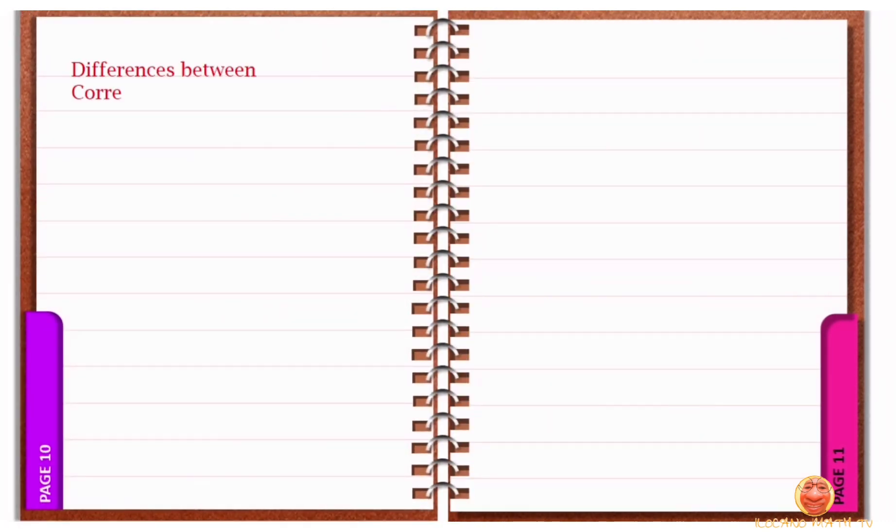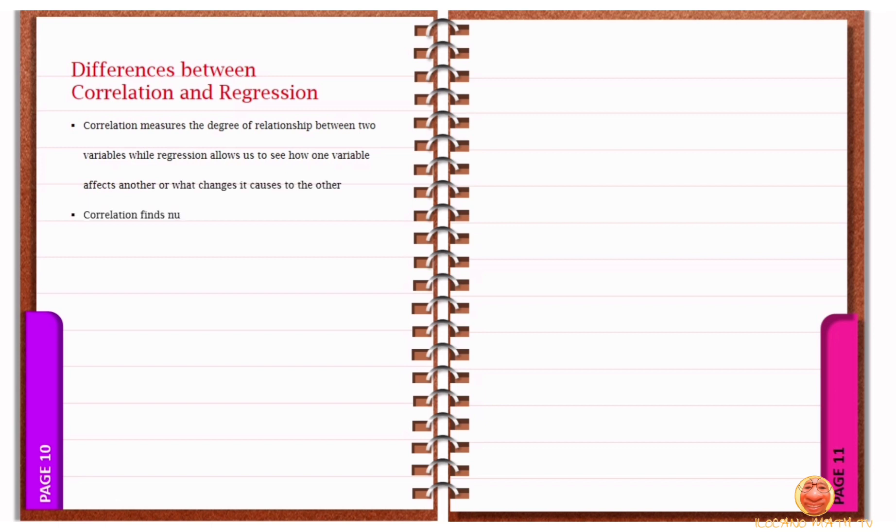Now, let's talk about the differences between correlation and regression. Correlation measures the degree of relationship between two variables, while regression allows us to see how one variable affects another or what changes it causes to the other. Correlation finds numerical value expressing the relationship between variables. Correlation estimates values of random variables on the basis of the values of a fixed variable. Correlation doesn't capture causality but the degree of interrelation between the two variables.